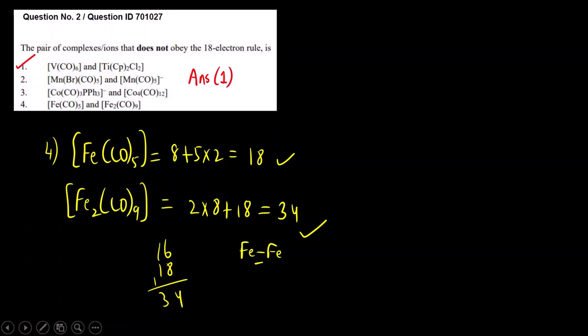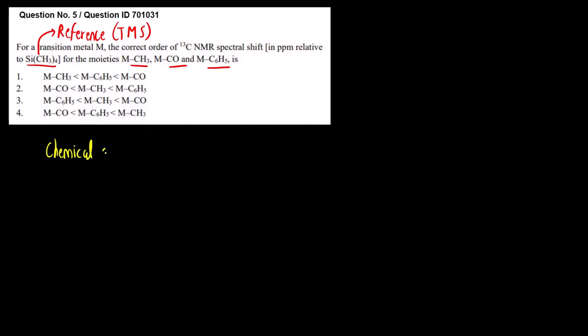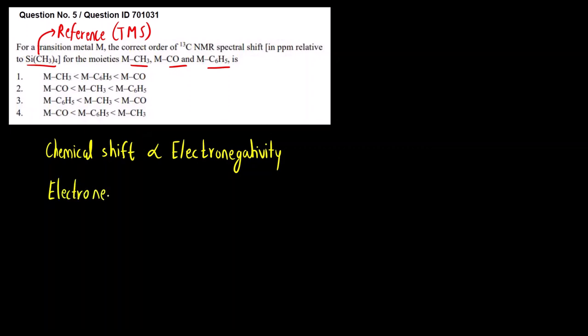Question 3: For a transition metal M, find the correct order of 13C NMR spectral shift for M–CH3, M–C6H5, and M–CO moieties relative to TMS (tetramethylsilane). The chemical shift values in both 1H and 13C NMR are directly proportional to the electronegativity of the attached group, and electronegativity is directly proportional to the percentage s-character.